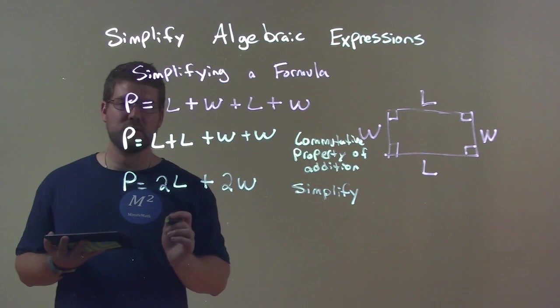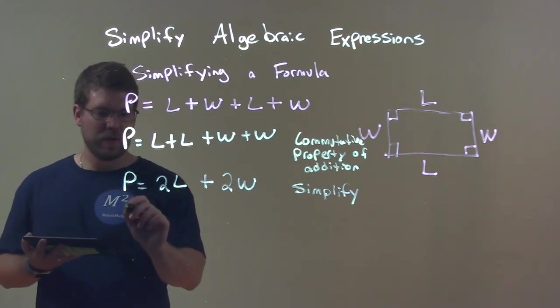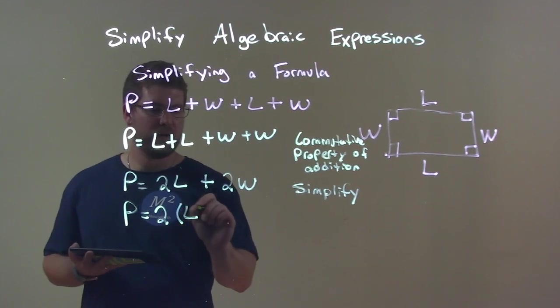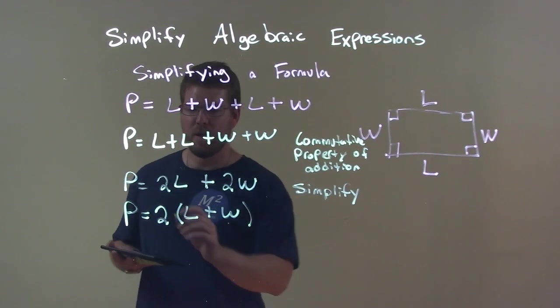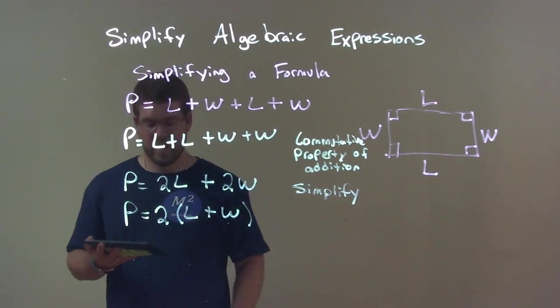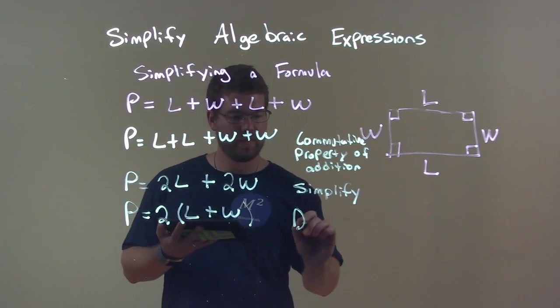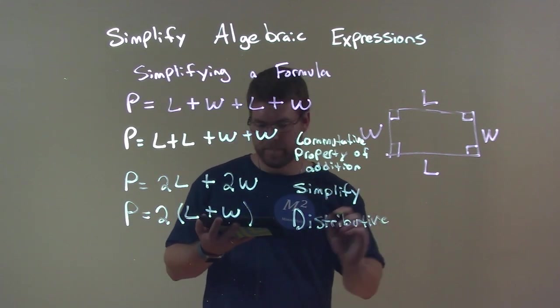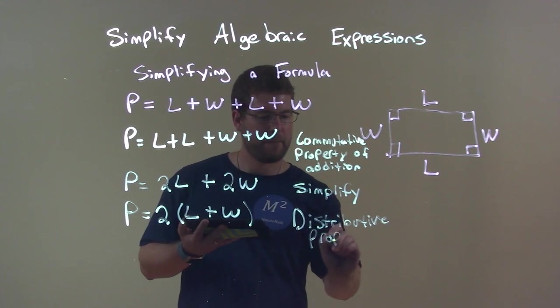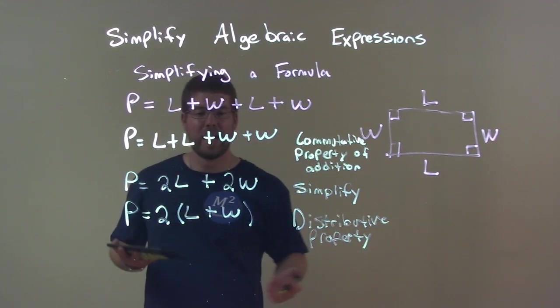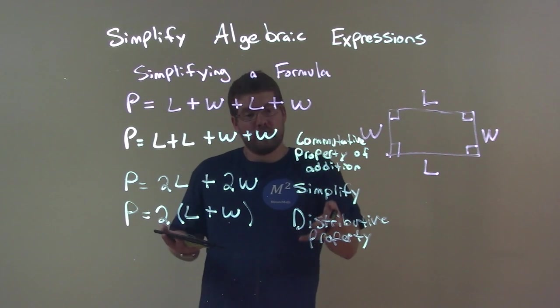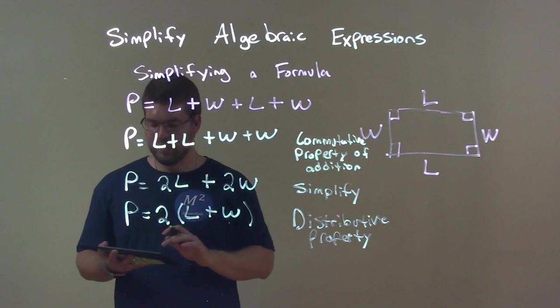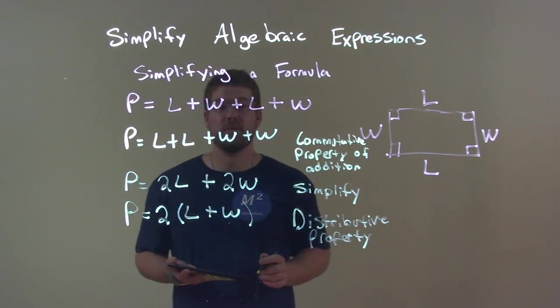Lastly, notice that we have a 2 here and a 2 there. We can pull that 2 out. And make a parenthesis. And we have L plus W. Now we have P equals 2 times L plus W. And that is actually the distributive property. And now we're done. We've got the simplest form. We simplified that formula for the perimeter rectangle. And it's P equals 2 times in parenthesis L plus W.